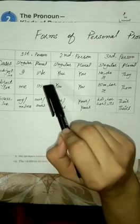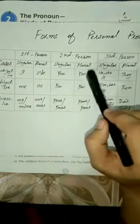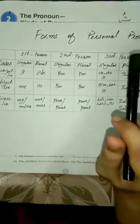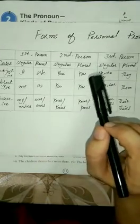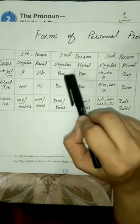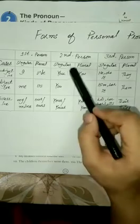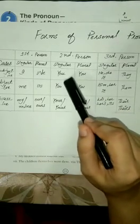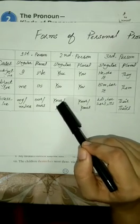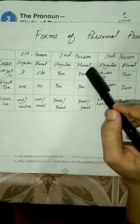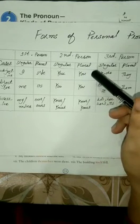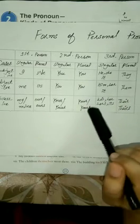Now come to second person. 'You' is second person. We can use 'you' as both singular and plural. The subjective case of 'you' is 'you'. The objective case of 'you' is also 'you'. The possessive case of 'you' is 'your' or 'yours'. When used as plural, it also remains 'you' in subjective and objective case, and the possessive case is 'your' or 'yours'.